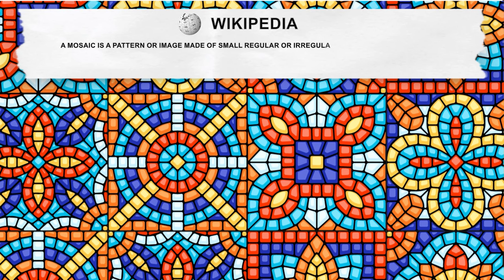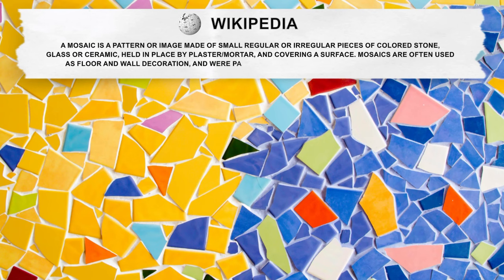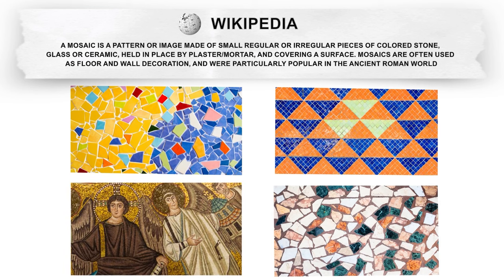Have you seen small pieces of stone put together at subway stations or restaurants? Well, these are mosaics. As per Wikipedia, a mosaic is a pattern or image made of small, regular or irregular pieces of colored stone, glass, or ceramic, held in place by plaster or mortar and covering a surface. Traditionally they were made out of natural stone or glass.